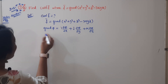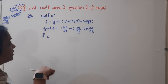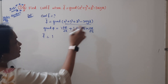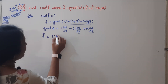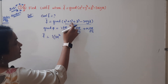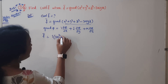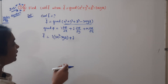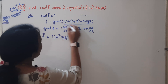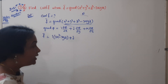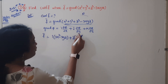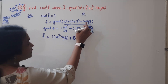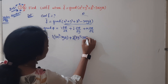Now apply the gradient concept. For ∂φ/∂x: y and z terms are 0, x³ gives 3x², and the -3xyz term gives -3yz (since x differentiates to 1). So the i component is (3x² - 3yz). For ∂φ/∂y: x term is 0, y³ gives 3y², and -3xyz gives -3xz. So the j component is (3y² - 3xz).